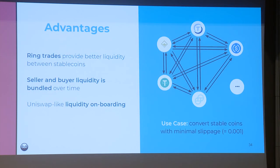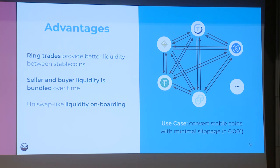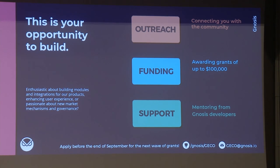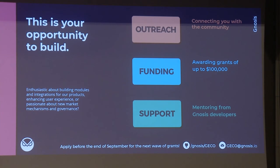For the Fusion POC, the advantages are: much easier handling of fragmented liquidity with ring trades; seller and buyer liquidity bundled over time to facilitate matching; and a cool feature allowing liquidity onboarding quite similar to the Uniswap protocol. If you're excited about these things, talk to me. Also, the Gnosis ecosystem will provide a challenge on finding these optimal prices very quickly. If you want to be involved, just follow it.